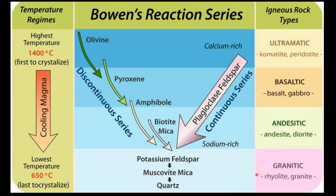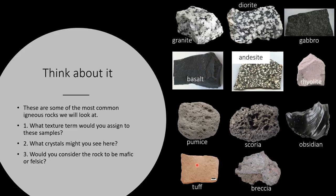Let's look at some of the most common rocks. Go through and consider what texture term you might assign to each sample, what crystals you might be able to see, and whether you'd consider it mafic or felsic. Mafic is high in magnesium and iron; felsic is low in magnesium and iron and high in silica and oxygen.